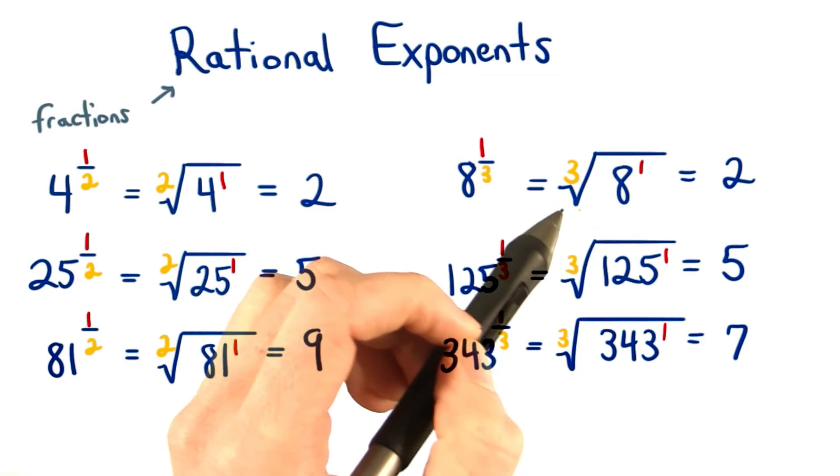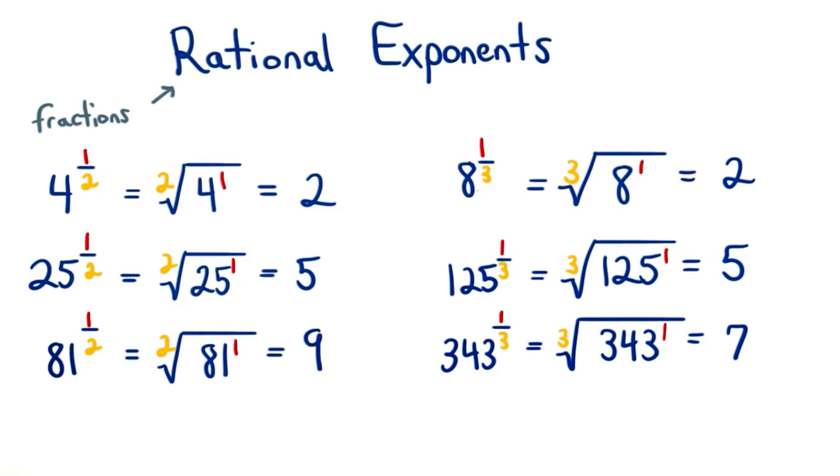We can write the cube root of 8 as 8 to the 1 third, and we can rewrite the cube root of 125 as 125 to the 1 third power. The same is true for 343.